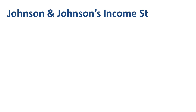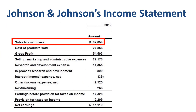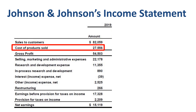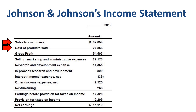Johnson & Johnson's income statement shows net sales of $82 billion at the top and net income of $15 billion at the bottom. Cost of Product Sold is right below the revenue line. Sales to Customers minus Cost of Product Sold equals gross profit. For all the products whose revenue is in sales to customers, the costs should be in cost of products sold.